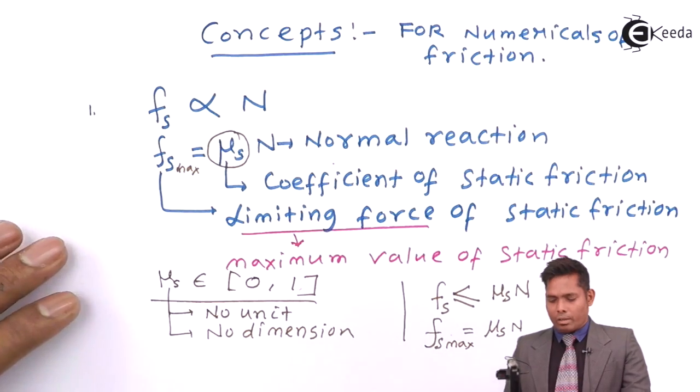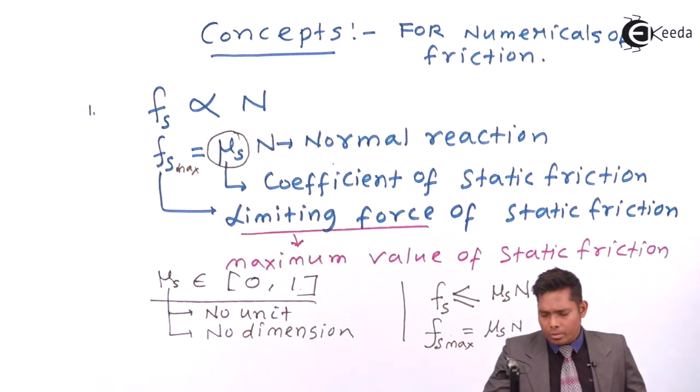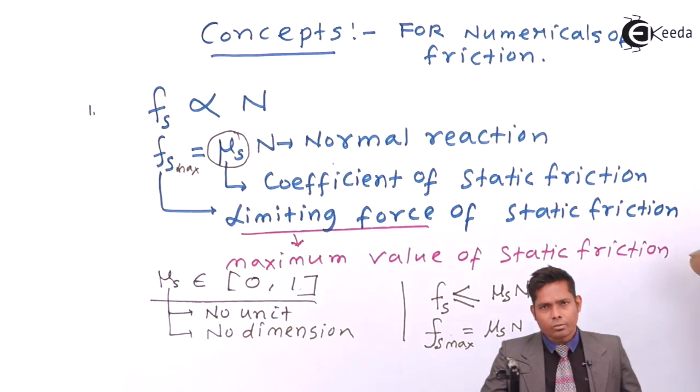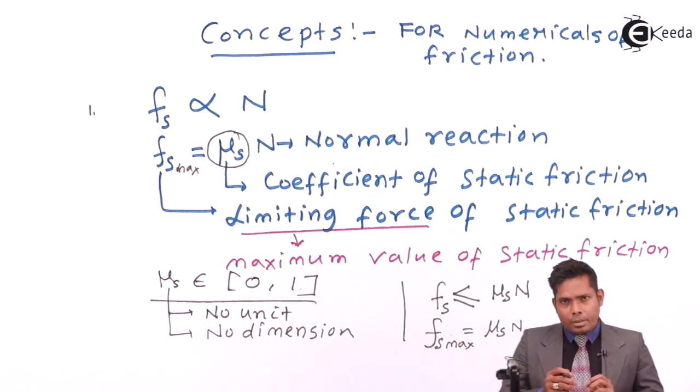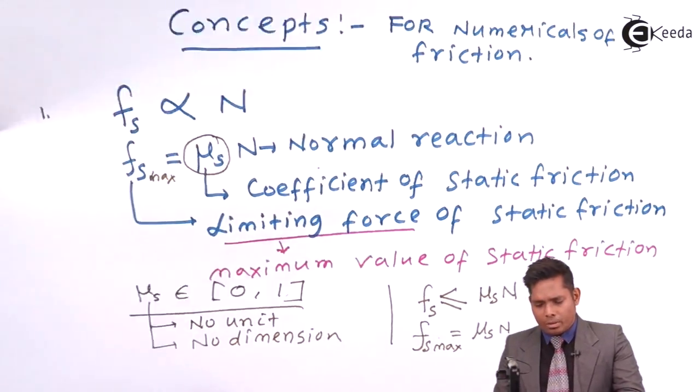We will discuss this with the help of an example. I will take one numerical and solve it, starting simple and gradually increasing the difficulty. Let us start with a simple question: consider an object of mass 5 kg resting on a rough horizontal surface with friction coefficient mu = 0.3. I apply a sudden force and check if the object is moving, then find the acceleration and maximum value of friction possible.